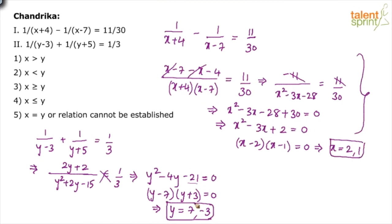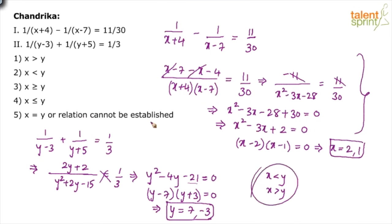Now we have x equals 2 or 1, and y equals 7 or minus 3. There are four comparisons: 2 vs 7 gives x less than y; 2 vs minus 3 gives x greater than y; 1 vs 7 gives x less than y; 1 vs minus 3 gives x greater than y. Since the results are inconsistent, the relationship cannot be established. The answer is option 5.